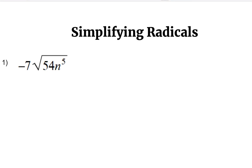Welcome to Math City with Ms. Chi. Today we are going to learn how to simplify radicals. Radicals is an expression that contains a square root. You see a symbol that we usually call a square root, and another term to describe this symbol is radical — the radical symbol. So we are trying to simplify this type of expression.